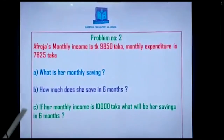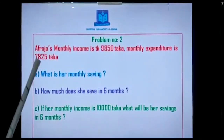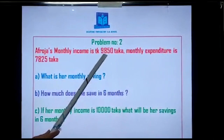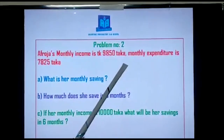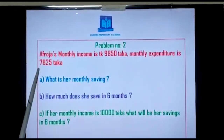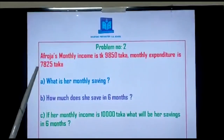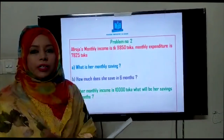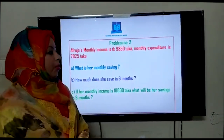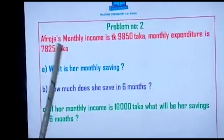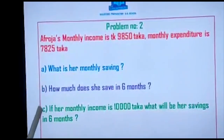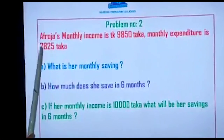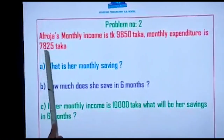Now I am going to start — problem number 2. Look, what is the question? Afroza's monthly income is 9,850 Taka and monthly expenditure is 7,825 Taka. In a structural question, they will give you the information and you have to solve the problem using that information. They will ask you three questions from this information.